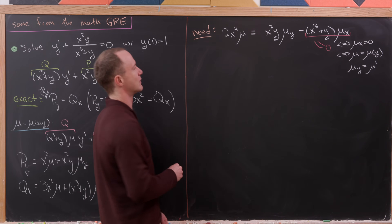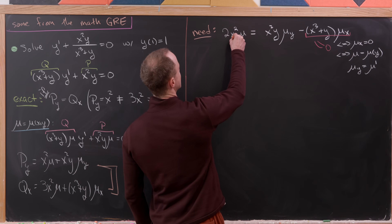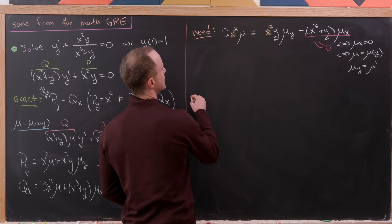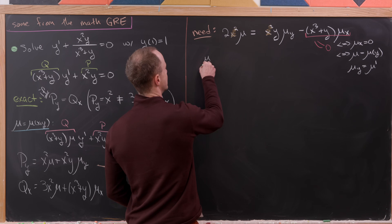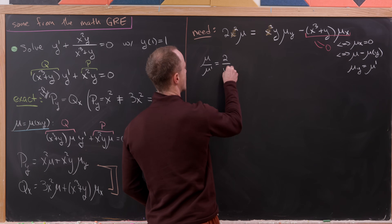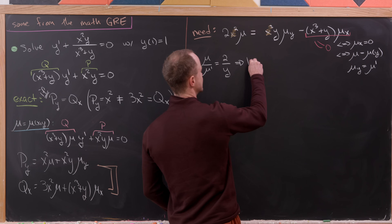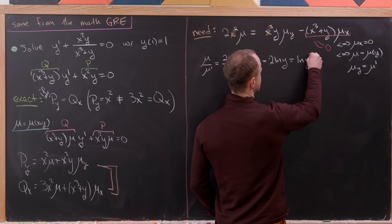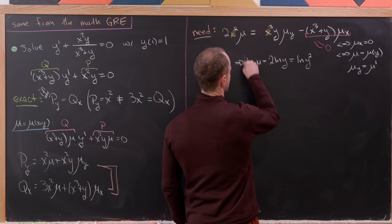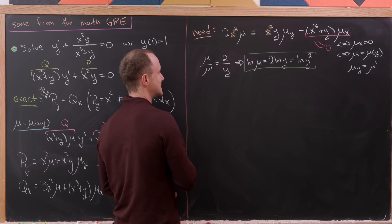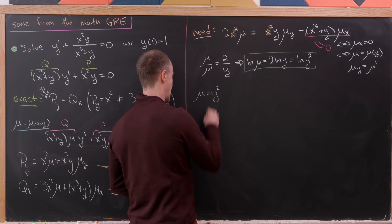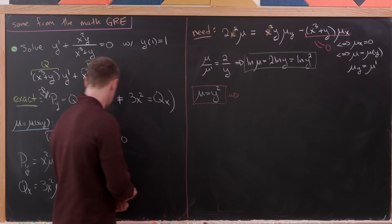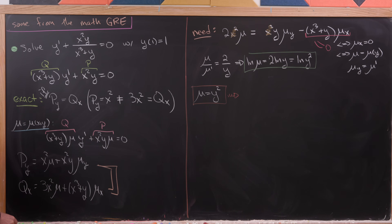With μ_x = 0, dividing both sides by x² and rearranging gives μ/μ' = 2/y. Integrating both sides: ln(μ) = 2 ln(y) = ln(y²), so μ = y².